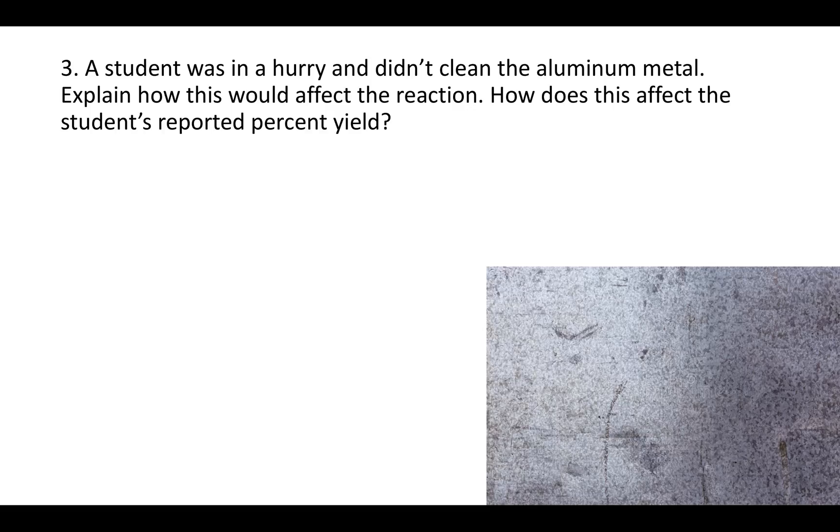Question three says, A student was in a hurry and didn't clean the aluminum metal, explain how this would affect the reaction and how does this affect the student's reported percent yields? So this is really two questions. The first one is explain how this would affect the reaction and it can affect it in a couple of ways.